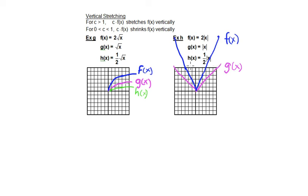Next, h of x equals one half times the absolute value of x. As we would expect, the y values are cut in half and the graph becomes shorter. When x equals 2, the absolute value of 2 is 2, but half of that is 1 — so h of x has a point at (2, 1). When x equals 6, the absolute value of 6 is 6, but half of that is 3. The graph for h of x is half as tall as the graph for g of x.